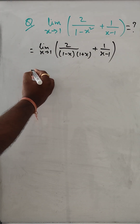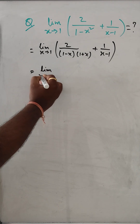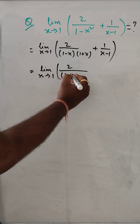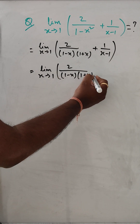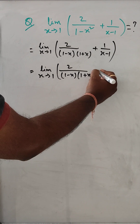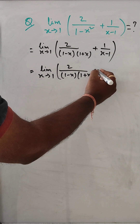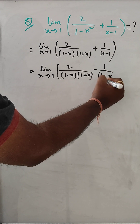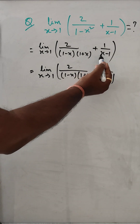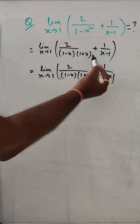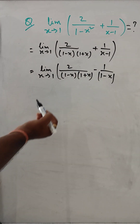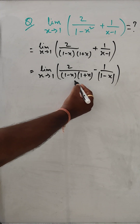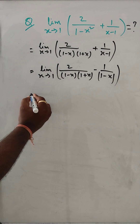In the next step, limit x tends to 1: we have 2 over (1 minus x)(1 plus x), and here we can take minus out from the second term — so minus 1 over (1 minus x). We change x minus 1 to 1 minus x and put a minus sign in front. Now we can take LCM.